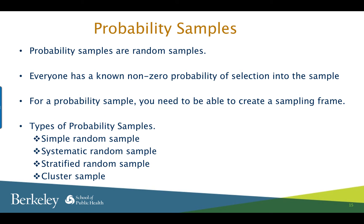Let us now look at probability samples. Probability samples are random samples. Each individual or group from the sampling frame is randomly selected with a known non-zero probability. For a probability sample, you need to be able to create a sampling frame — a list of all population members. Know that many times such lists do not exist, and it can be very expensive to create a sampling frame. You are lucky if you come across an existing sampling frame.